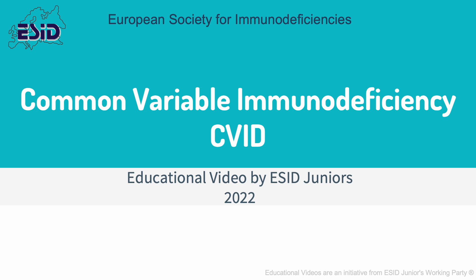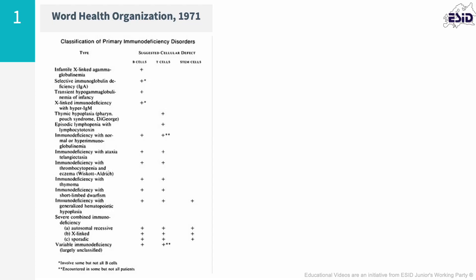CVID is the most common symptomatic primary antibody deficiency in humans. The acronym CVID was coined in 1971 by the World Health Organization to distinguish non-defined antibody deficiency conditions from syndromes of known Mendelian inheritance that are associated with low immunoglobulins.